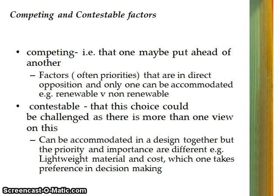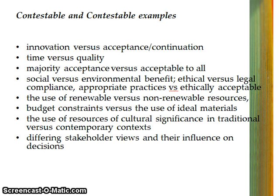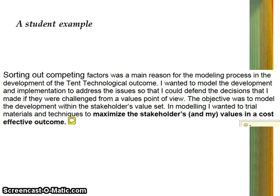So, those competing and contestable factors. Competing refers to things that actually vie for a place — renewable versus non-renewable resource is a really good way of explaining that. Kids will get competing factors quite easily because it's something they manage all the time, like budget versus materials. Contestable is around accommodating different points of view and how different people and different groups actually will challenge decision making based on that point of view. Here are some examples: time versus quality, innovation versus continuation or acceptance, differing stakeholder points of view. From the exemplars, here's a really good example of how a student has talked about what they're actually doing within their own practice around competing and contestable.